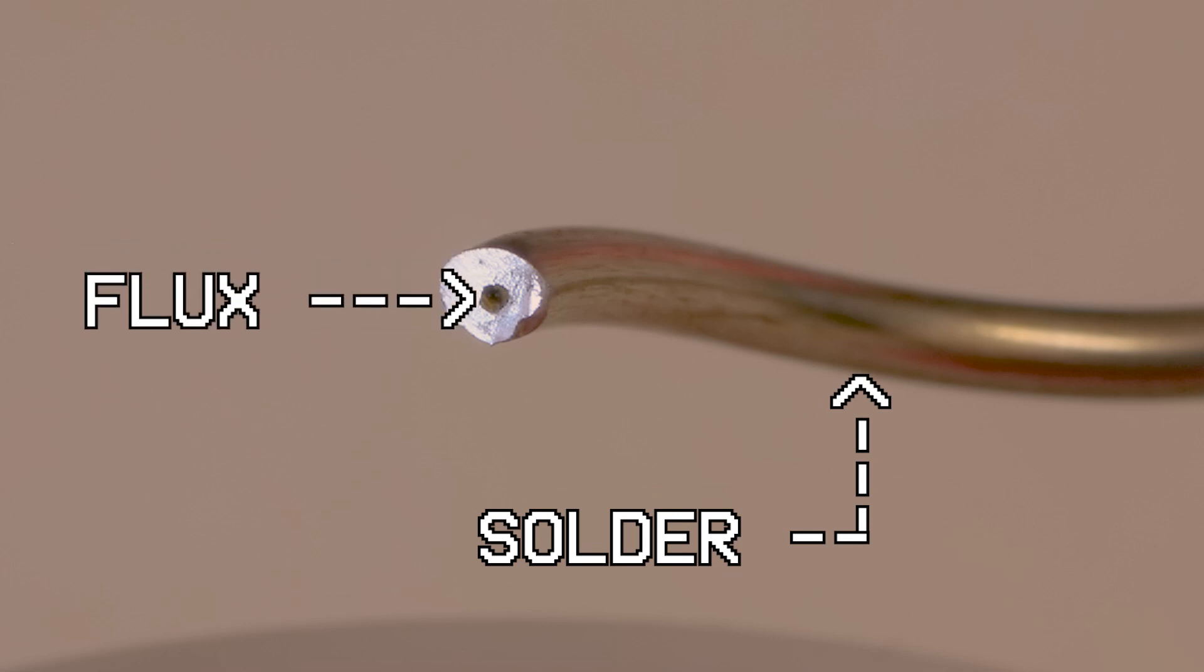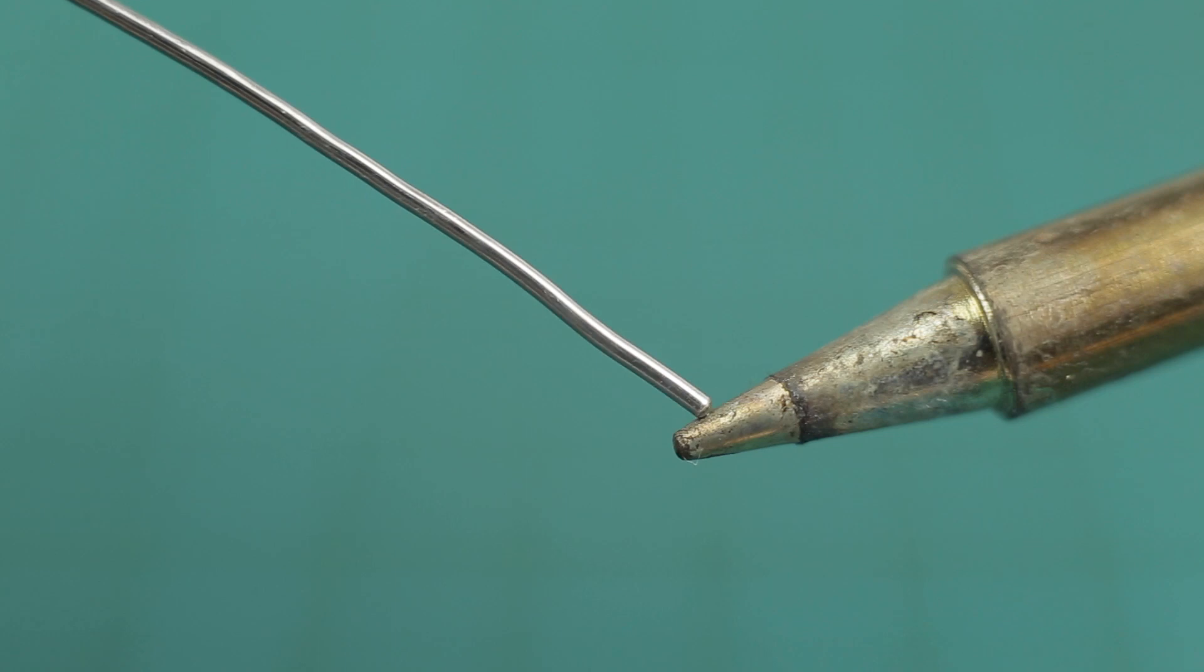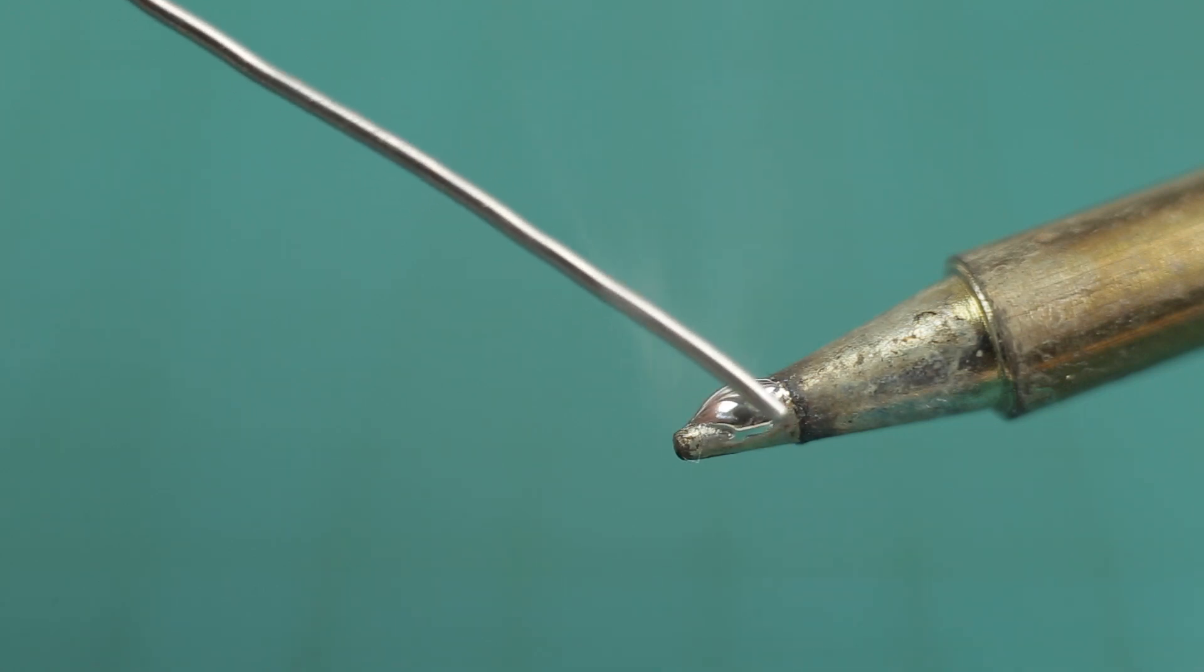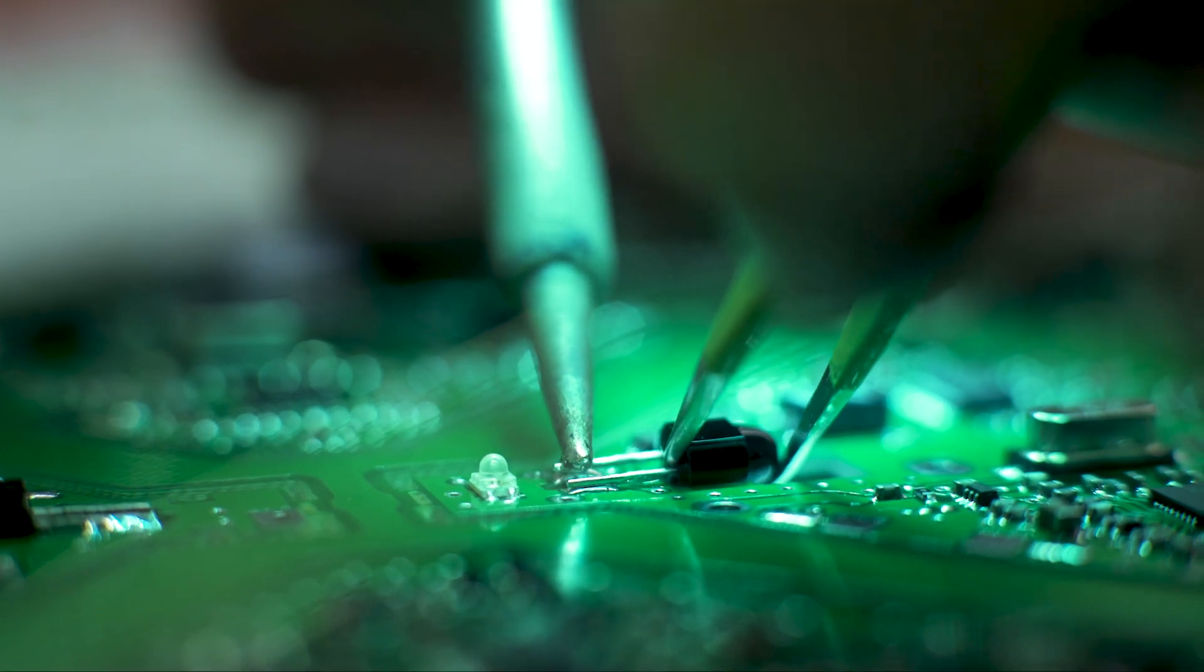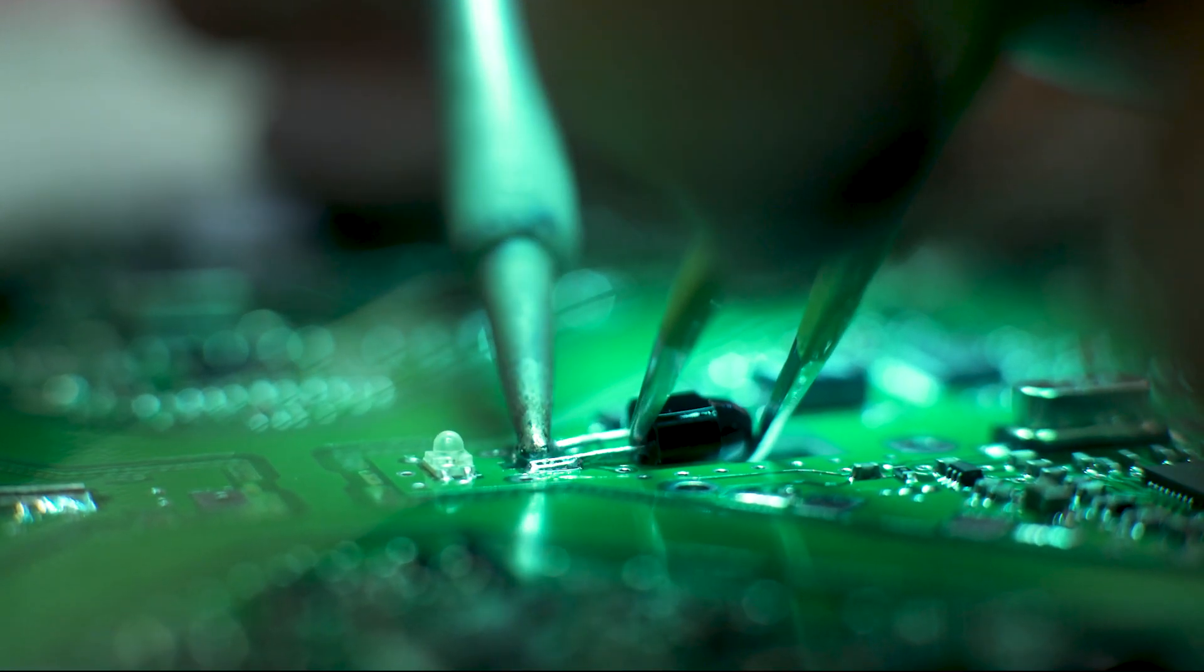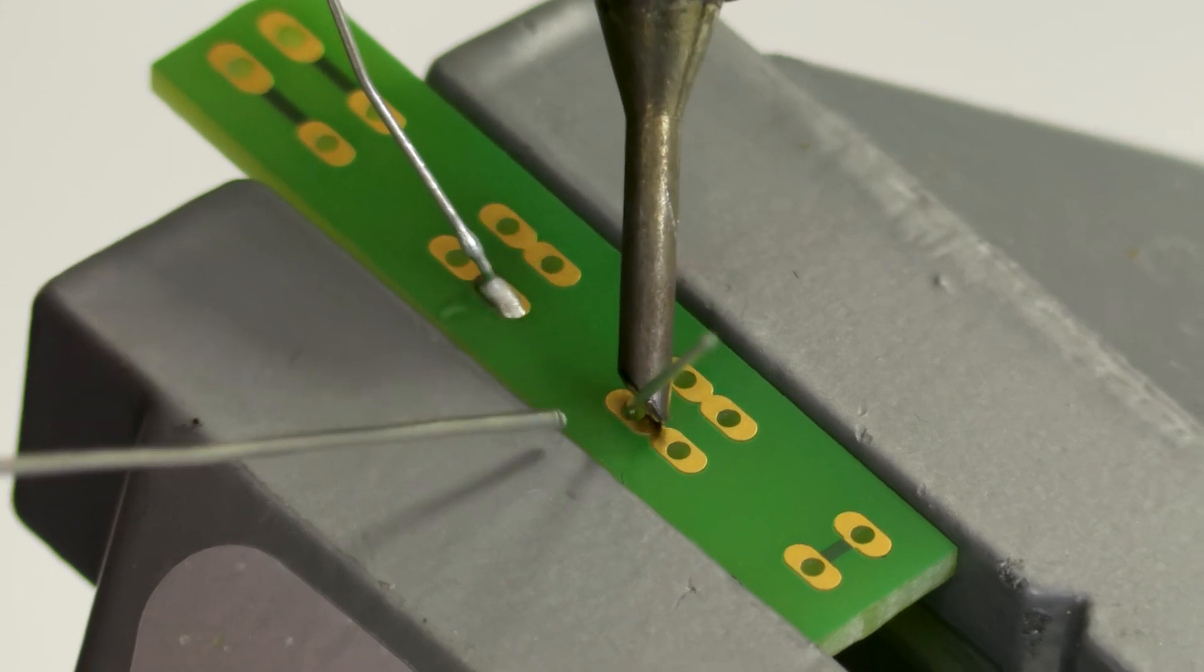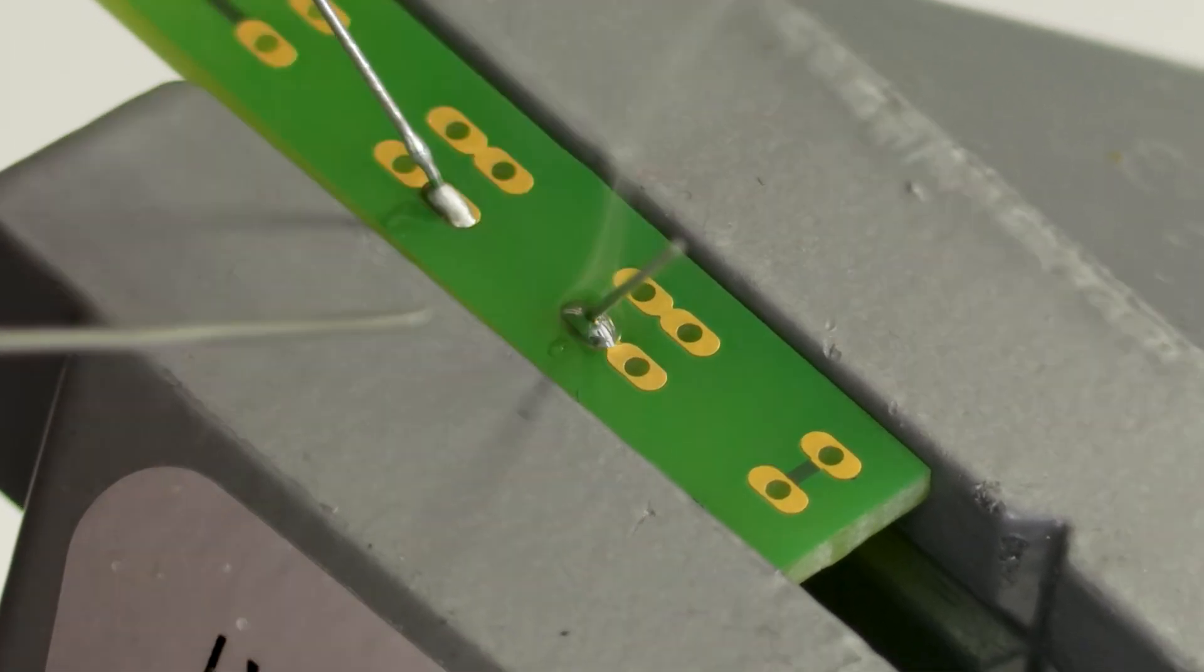Solder contains flux. This is a chemical that helps the solder to flow and improves conductivity by reducing oxidation on the surface of the metals being soldered together. There are two different types of solder joint, surface mount and through hole. This video will demonstrate through hole soldering only.